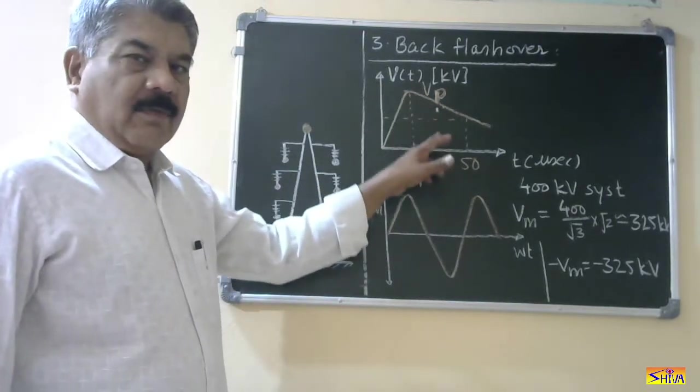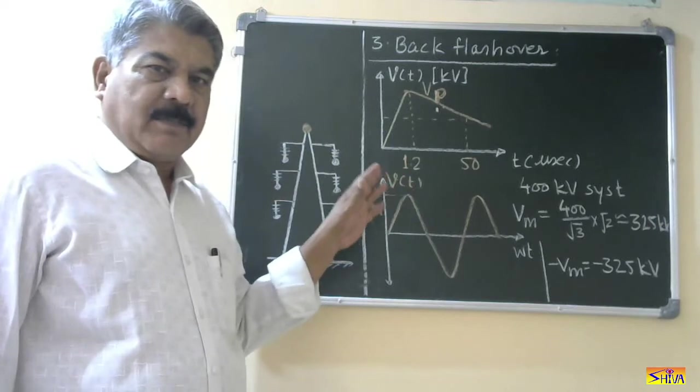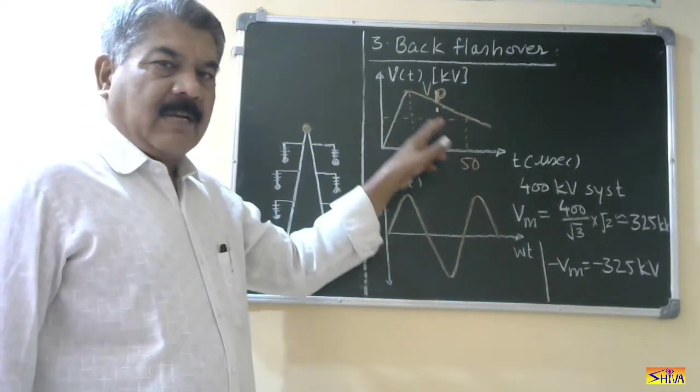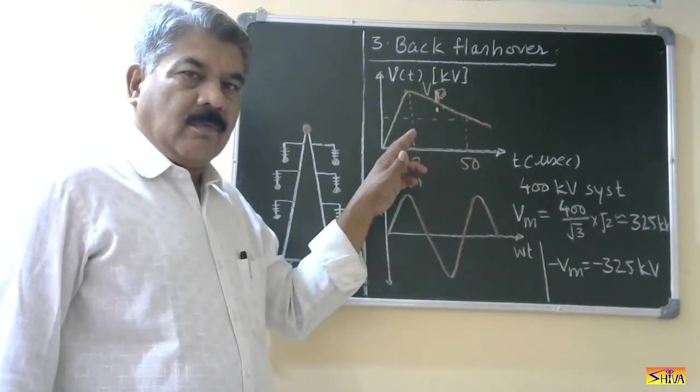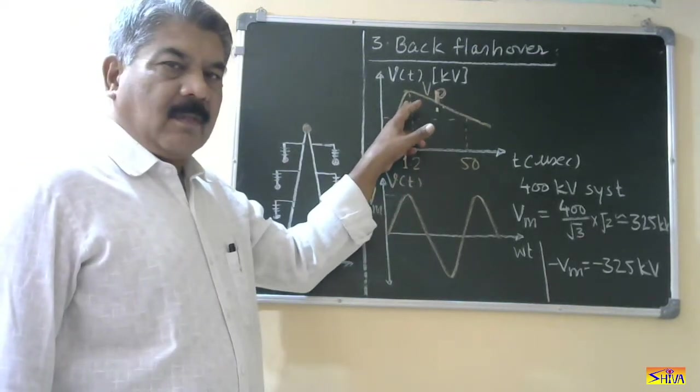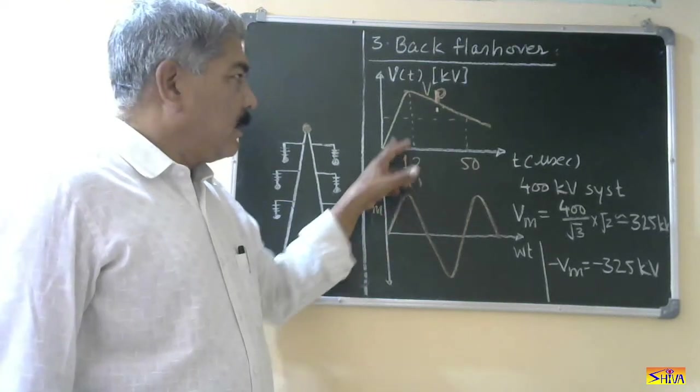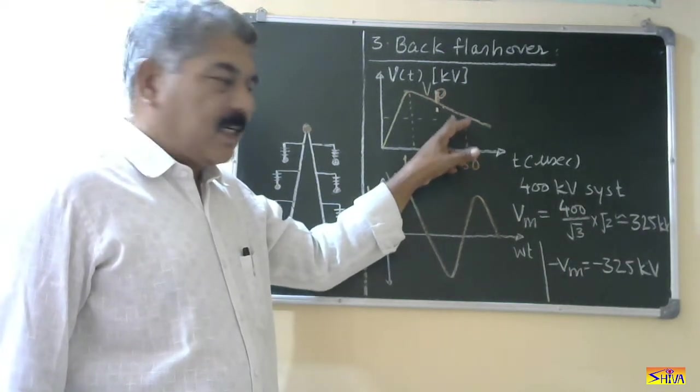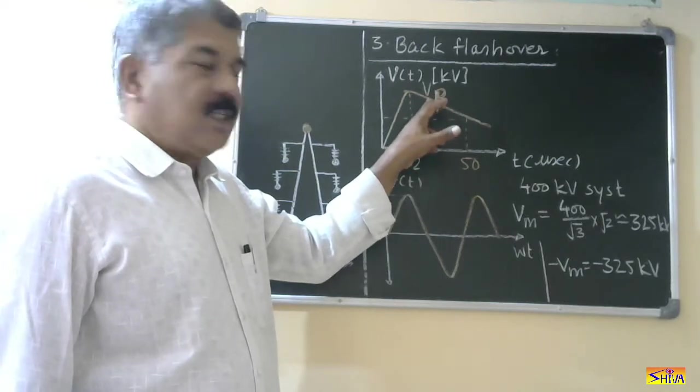Now this is the waveform of lightning stroke or lightning overvoltage. That I had explained it is impulsive nature. Fast rise and relatively slow decay. This waveform we describe or we nominate by three parameters. Rise time as per Indian standard it is 1.2 microseconds. Decay time that is time to reduce to 50 percent of peak value. As per Indian standard it is 50 microseconds and then the peak value that is Vp.